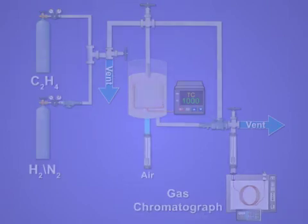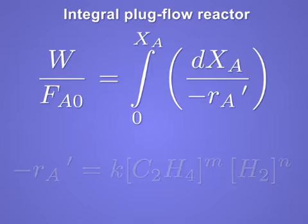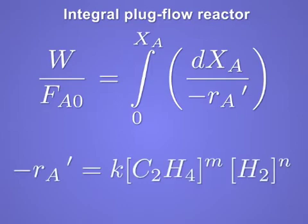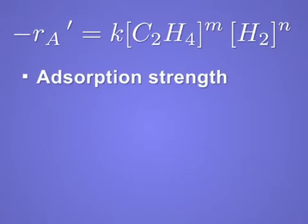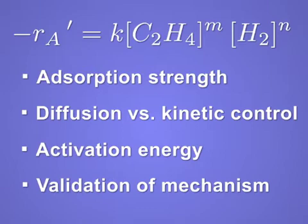The system is appropriately modeled as a plug-flow reactor, since high conversions and spatially variable reaction rates are expected. Applying this model to the reactor effluent data yields a power law rate expression for the catalyzed reaction. This expression provides a wealth of information about the catalyst and provides experimental evidence for the Langmuir-Hinshelwood mechanism.